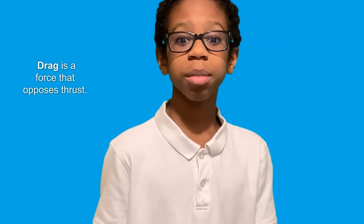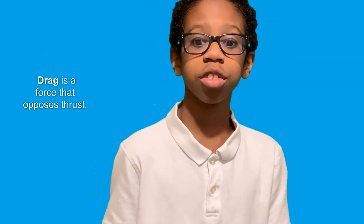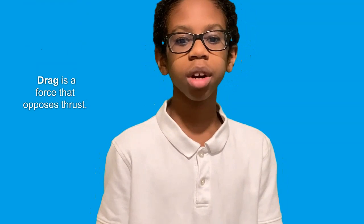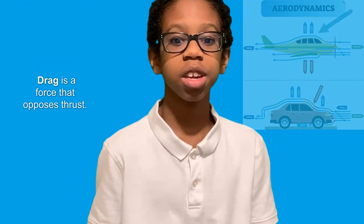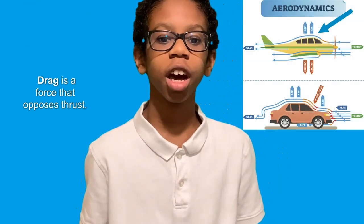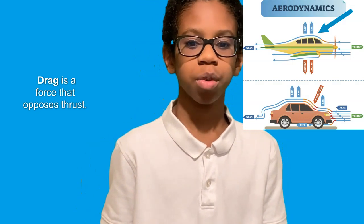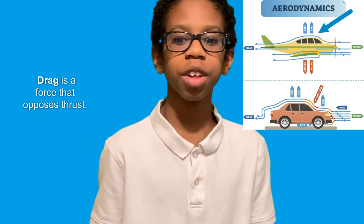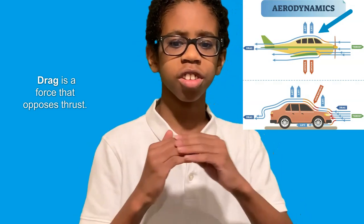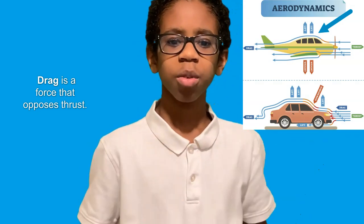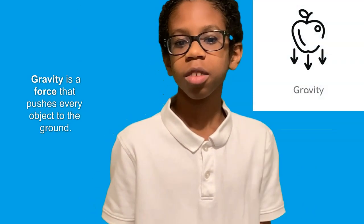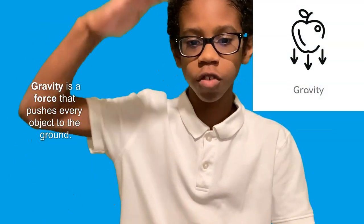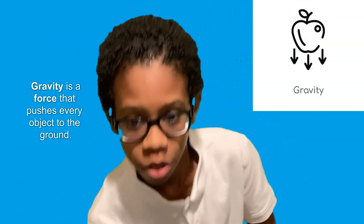Now we'll talk about drag. Drag is an opposing force to thrust. Unlike thrust, drag is a force that decreases the speed of a moving object. For example, when an airplane flies, it faces air resistance, which is a type of drag. And finally, gravity is a force that pushes every object to the ground.